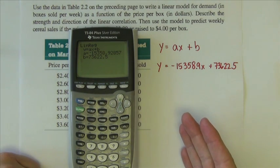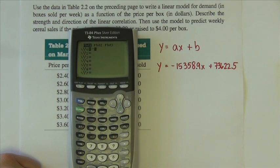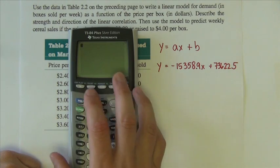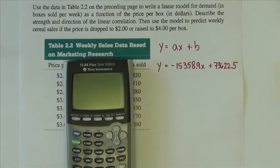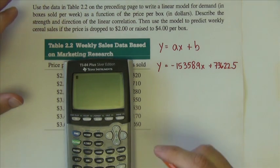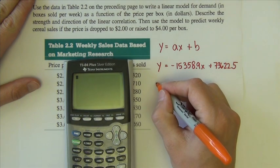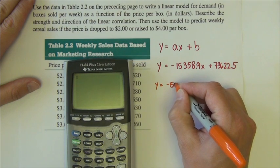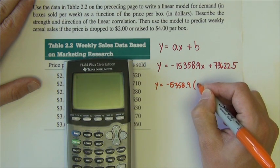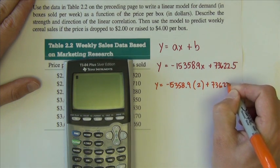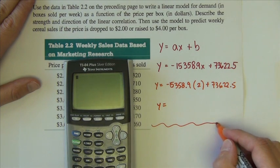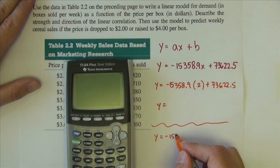If we wanted to see that line on the graph, we could certainly go into the Y equals and we could type that in. This is not a necessary step, but we could certainly do it, and hopefully we get a line that goes through those points that looks like a best fit line, and we certainly did. With this line, we're now ready to answer the questions. It says, use our model to predict the weekly cereal sales if the price is dropped to $2 or raised to $4.